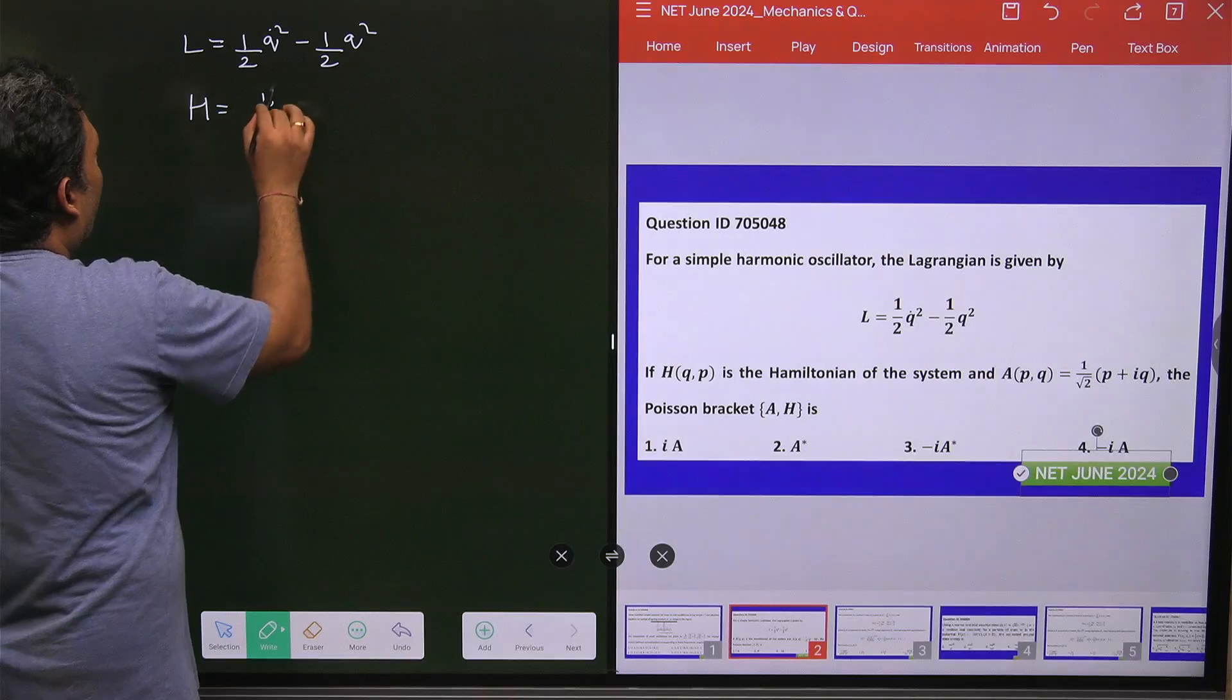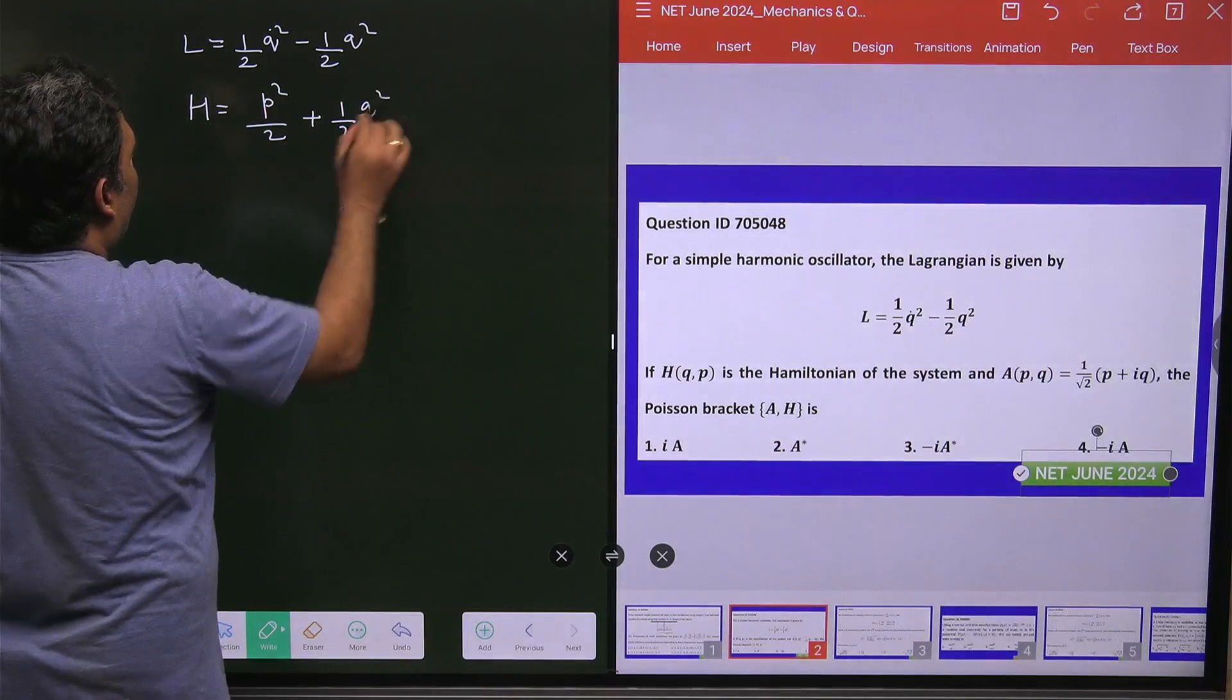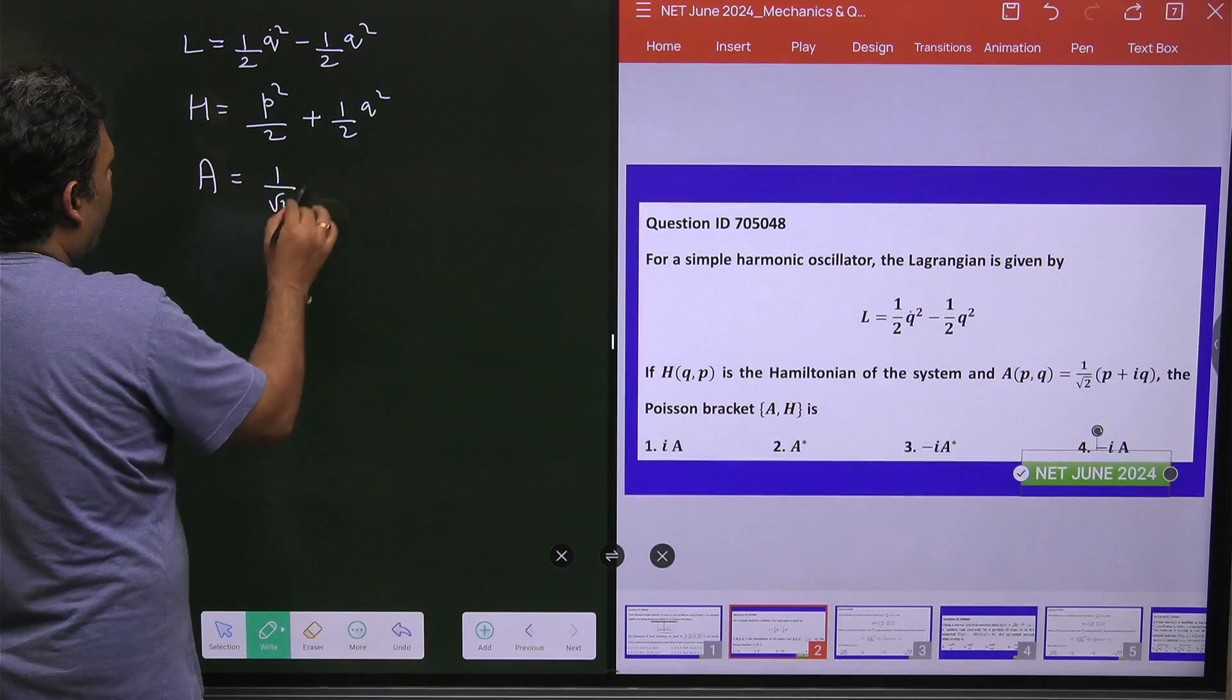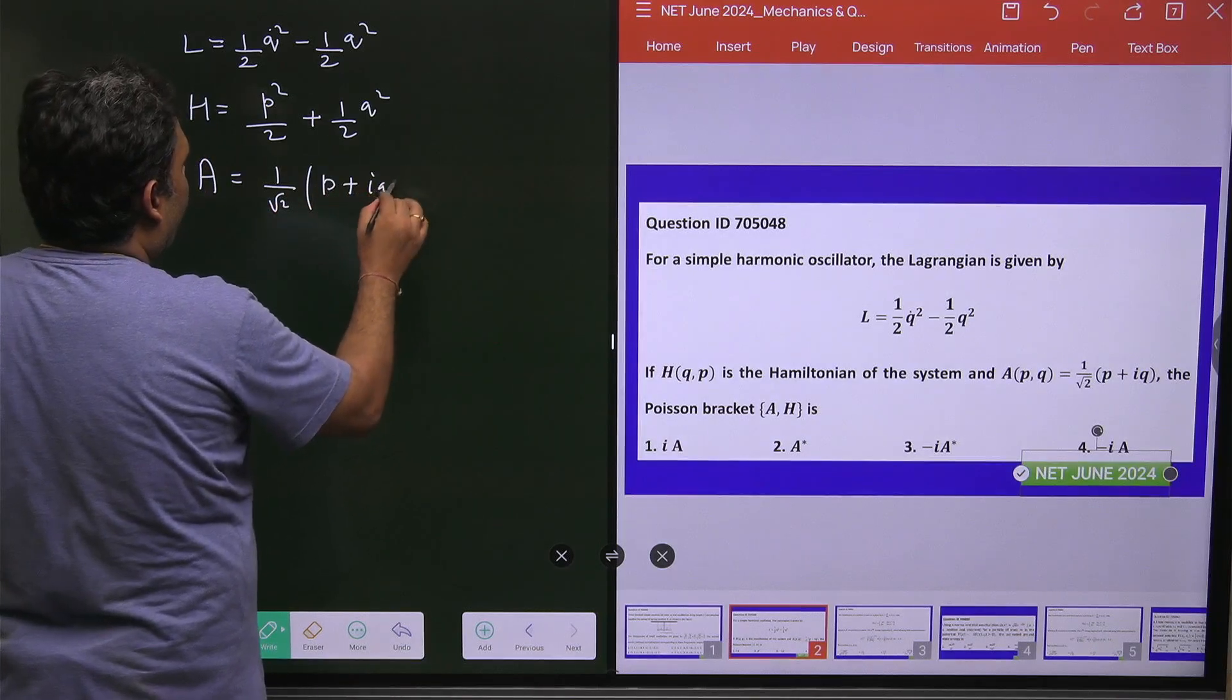What will be the Hamiltonian? The Hamiltonian is H = p²/2 + 1/2 q². And what is my A? A is the physical quantity 1/√2 (p + iq).